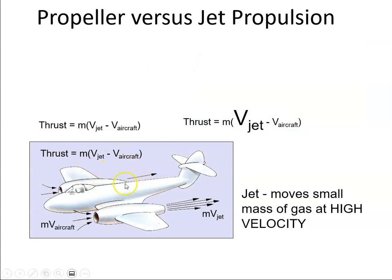This shows it here. For the turboprop, it's a large mass with a small acceleration. Whereas for the turbojet, it's a small mass with a large acceleration. So a jet moves a small mass of gas at high velocity.